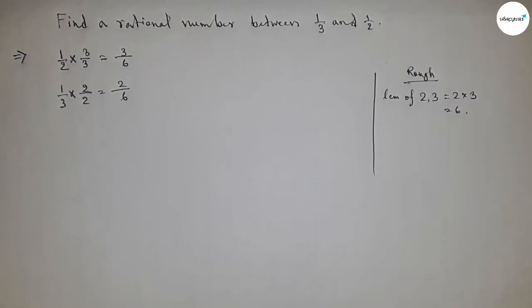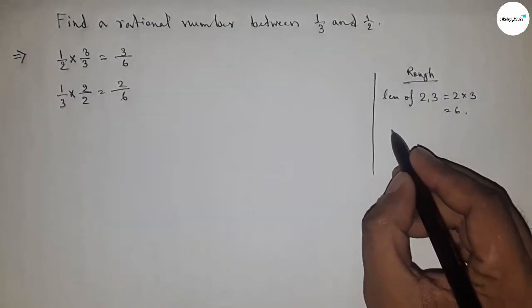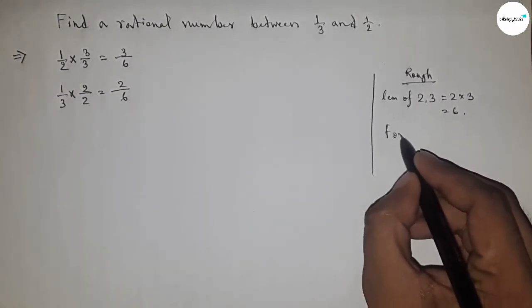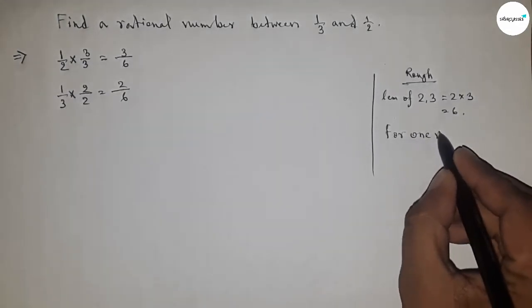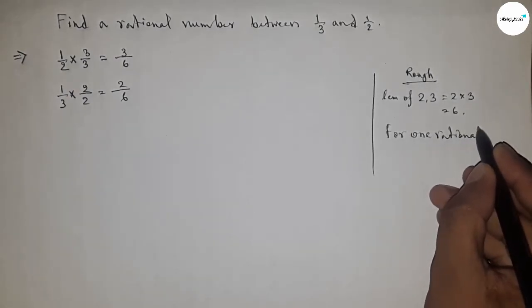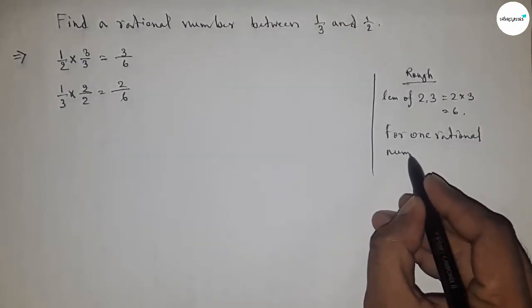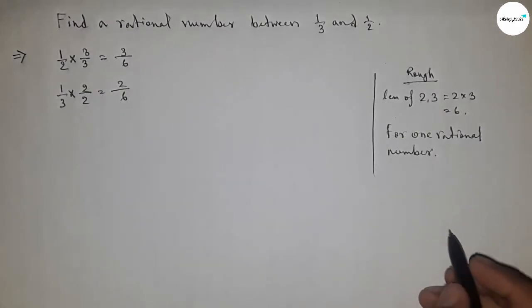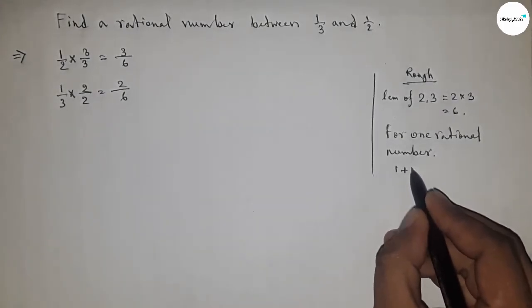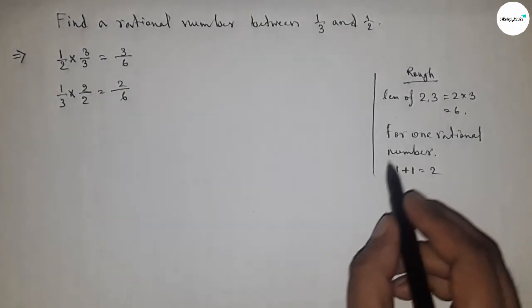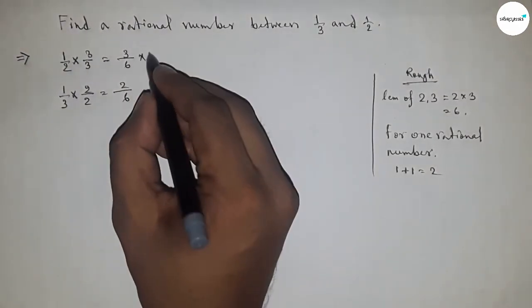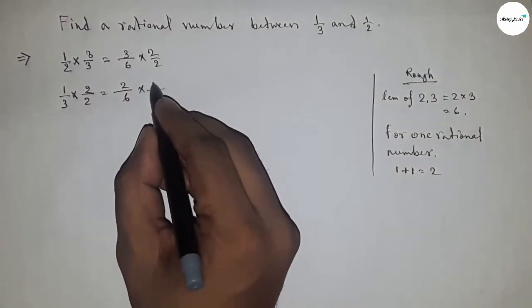Now, for one rational number, we have to multiply both rational numbers by 1 + 1 = 2. So we multiply this by 2/2 and here by 2/2.